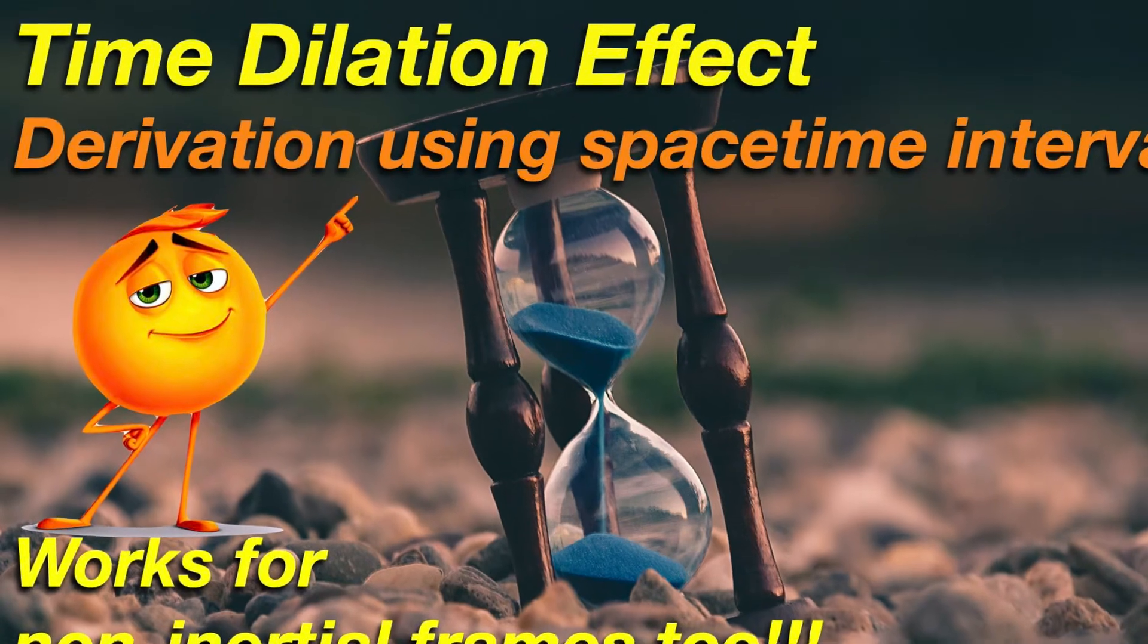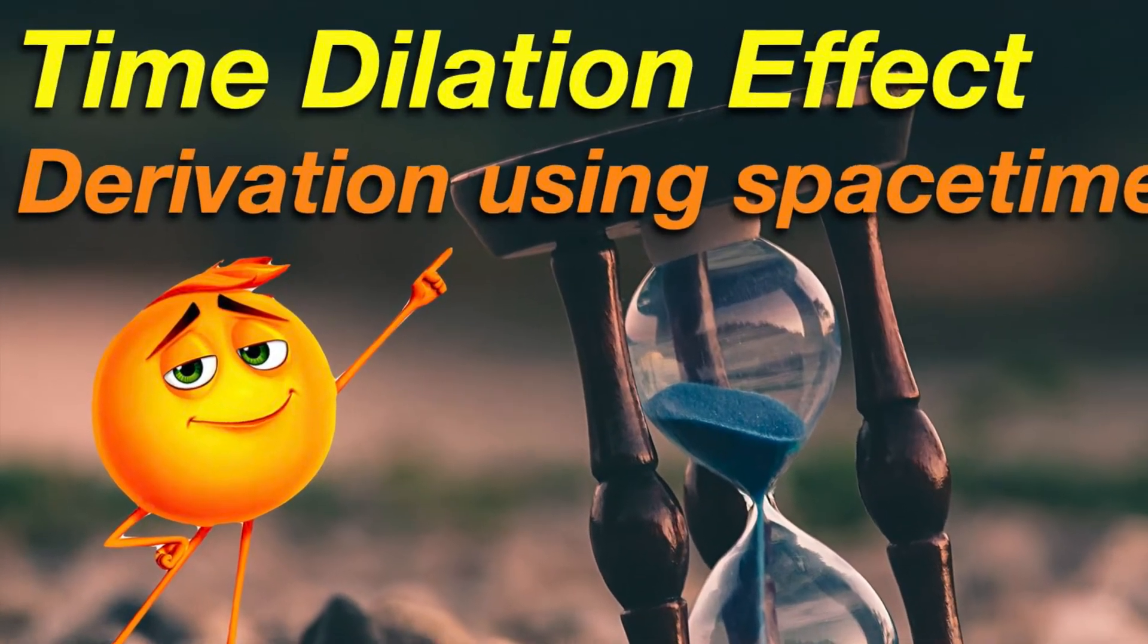To get to the moving clock runs slower statement, we need to start with the time dilation formula. We have derived it in detail with explanation in a previous video on this channel. You should definitely have a look. The link is in the i button. But for now, let me give you a quick brief on the formula itself. There are timestamps in the description. You can skip ahead to the contradiction and resolution part if you already know that stuff.